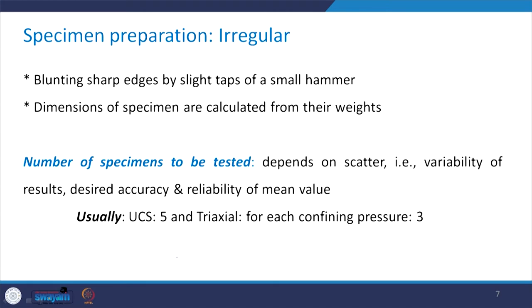In case of an irregular specimen, it may have very sharp edges or sharp corners. We blunt these sharp edges by slight taps of a small hammer, because wherever they are very sharp and load is applied at that point, stress concentrations will be extremely high and we will not get the correct picture of strength characteristics. It is important to blunt those sharp edges and corners. Dimensions of irregular specimens are calculated from their weight — we take the equivalent volume and from there find out the specimen dimensions.